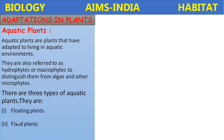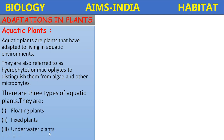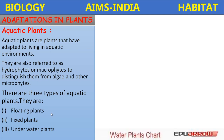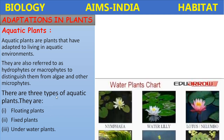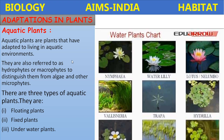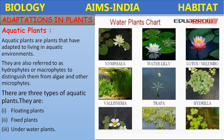There are three types of aquatic plants: floating plants, fixed plants, and underwater plants, also called submerged plants. Their internal organization suits them to survive in water. Examples include Nymphaea, water lily, lotus, Vallisneria, Trapa, and hydrilla.